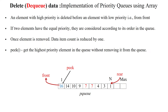Welcome to deletion operation in priority queue, which is implemented using the array data structure. The element with high priority is deleted first before the element which has low priority. That means we are going to delete the highest priority element available in front of the priority queue.